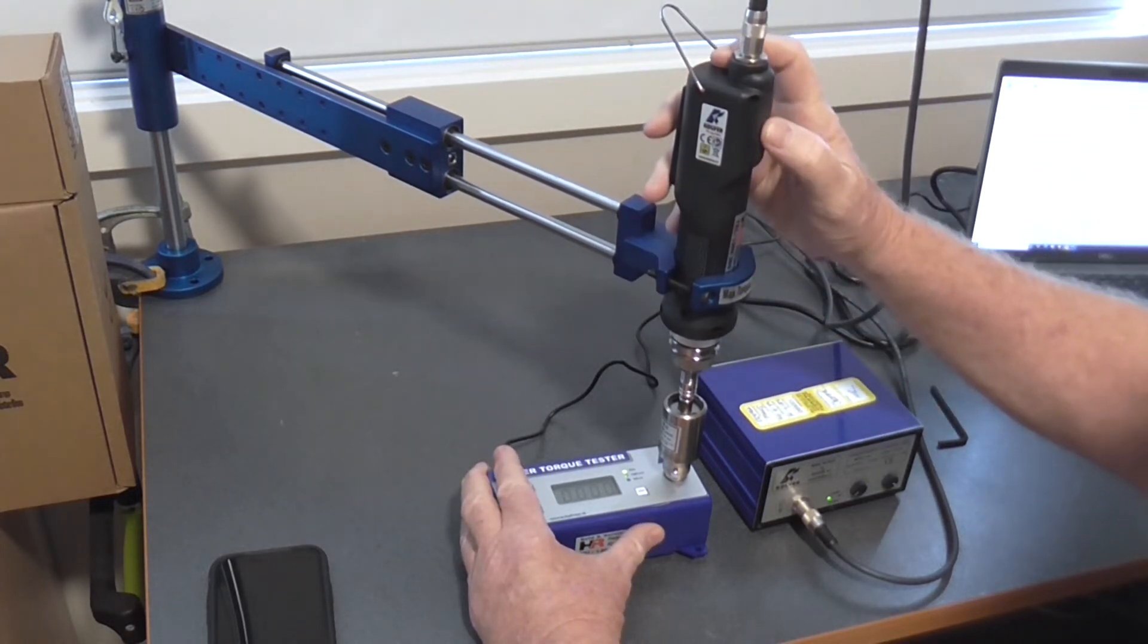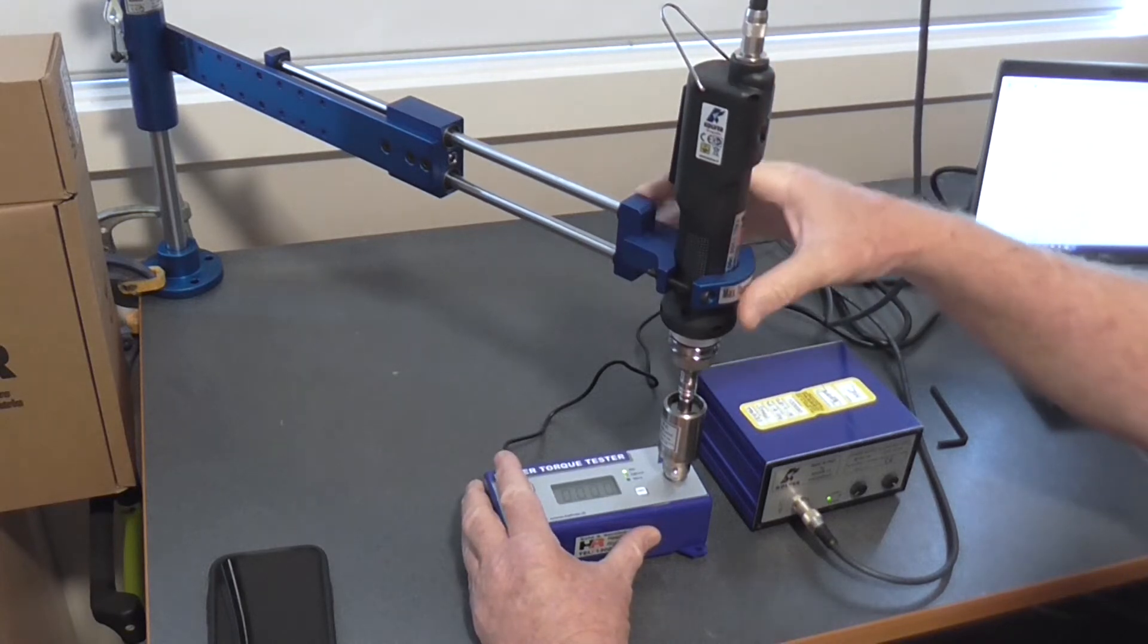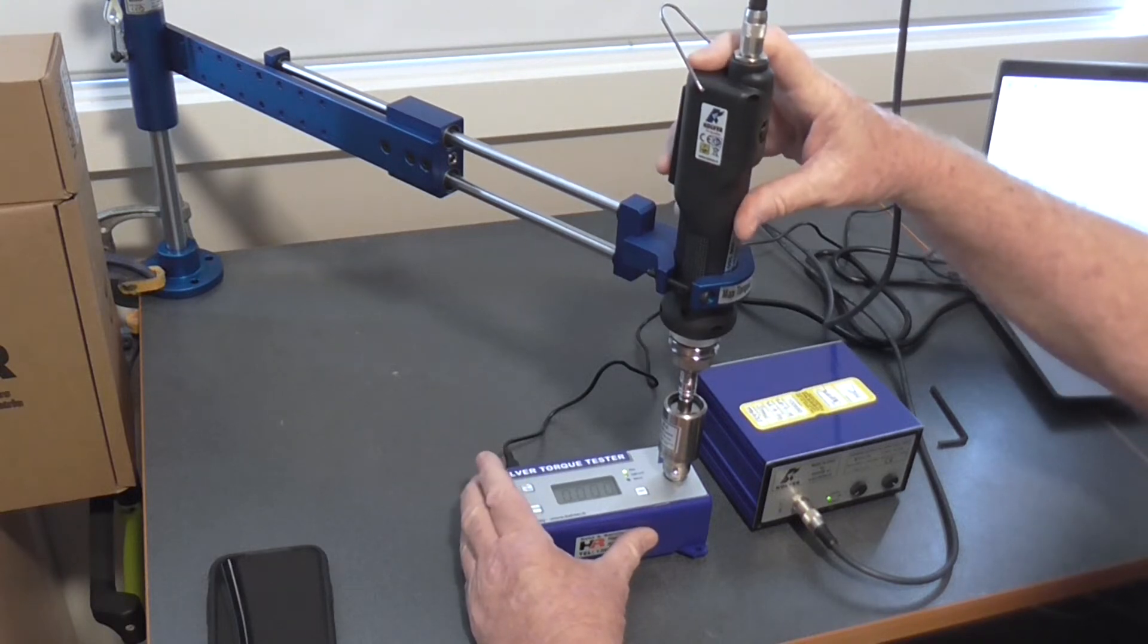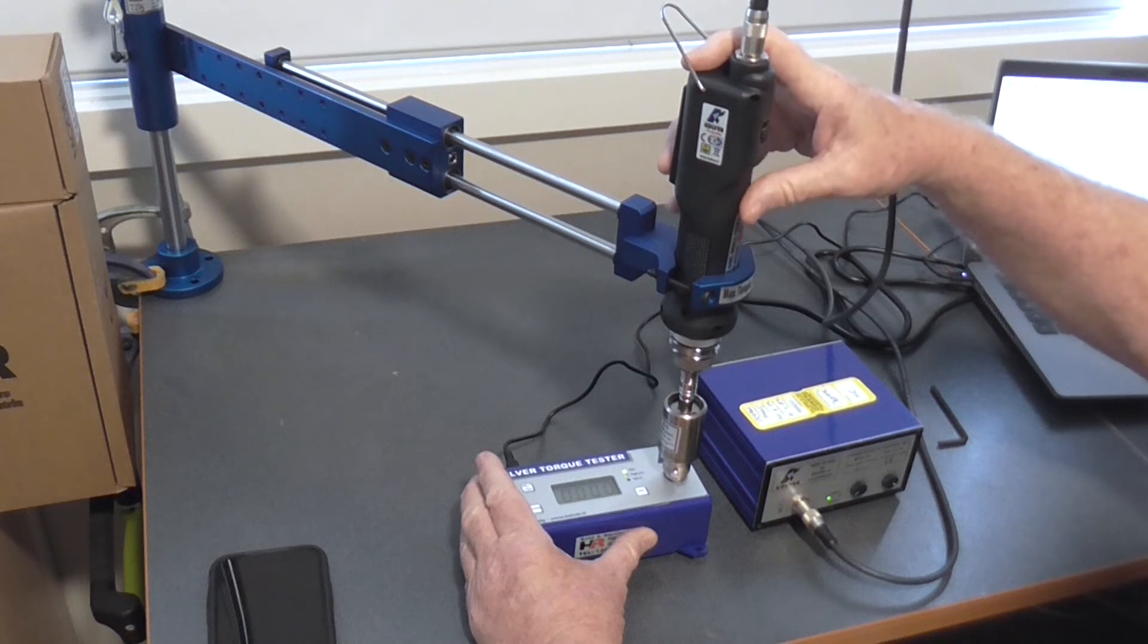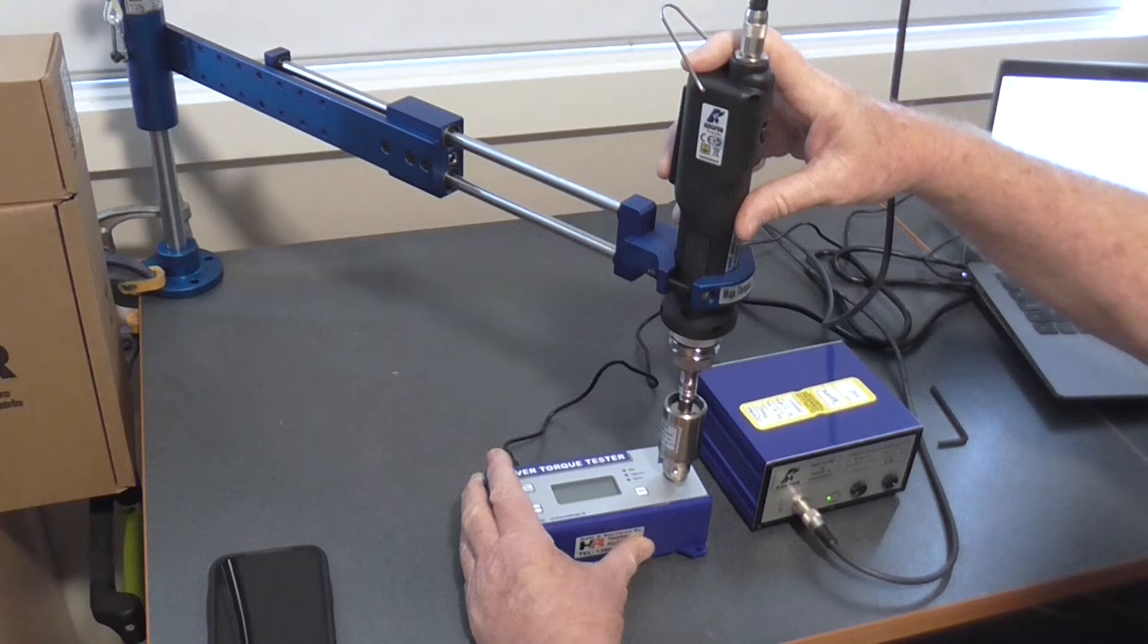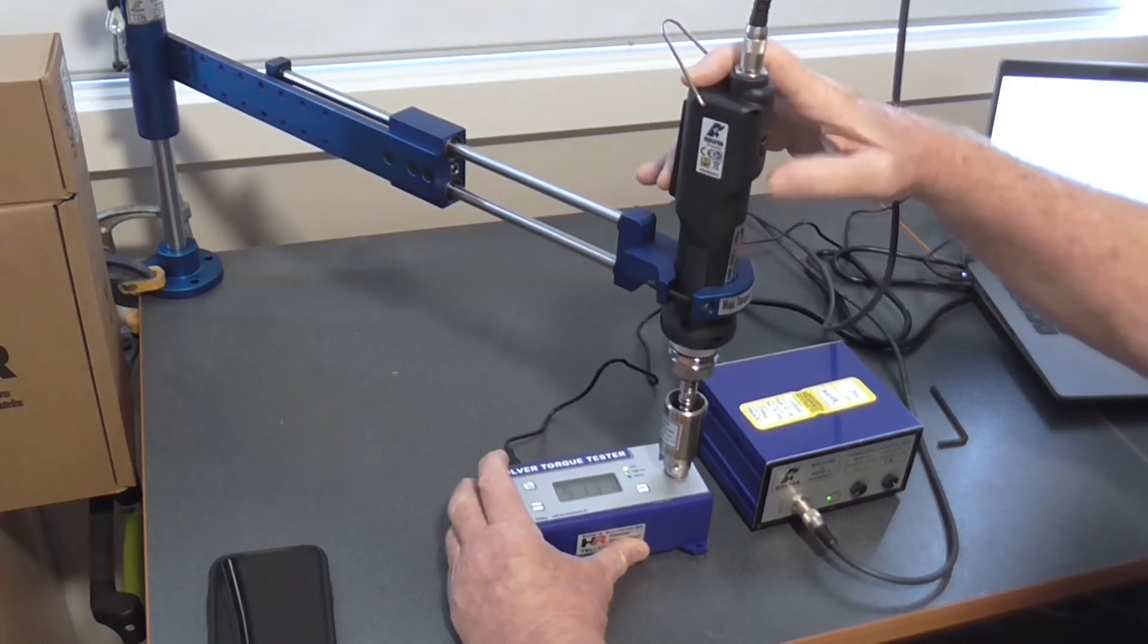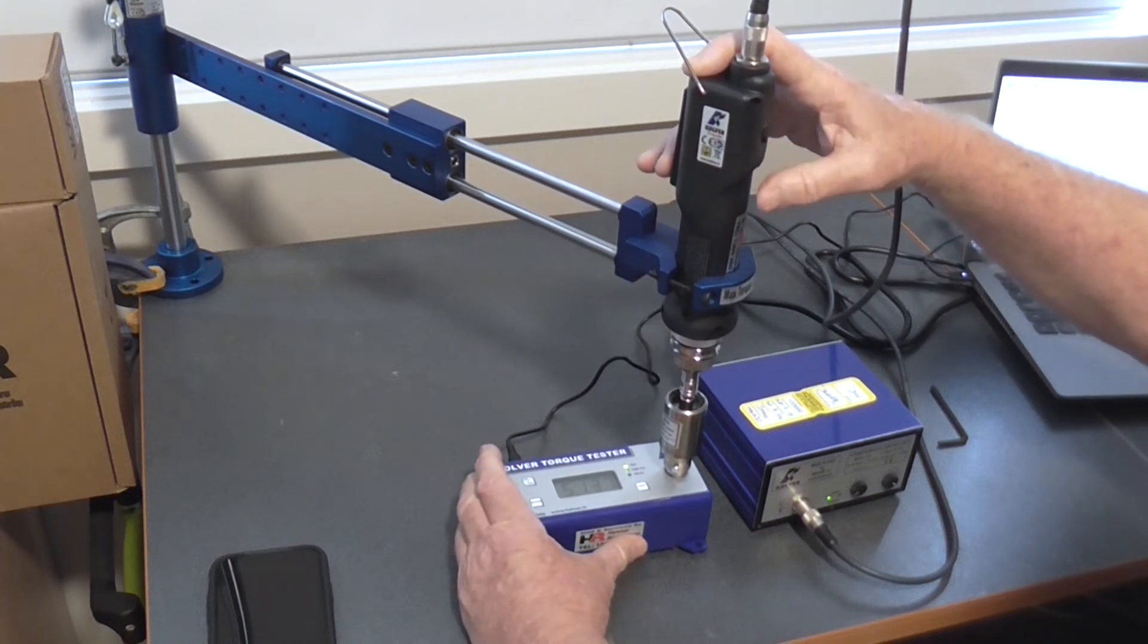So what you'll notice here is that I've got it mounted in the Liner One torque reaction arm. When I drive this down now I'm just going to hold it very lightly, I'm just going to use one finger to press the start trigger and you'll just notice there's no torque reaction whatsoever.